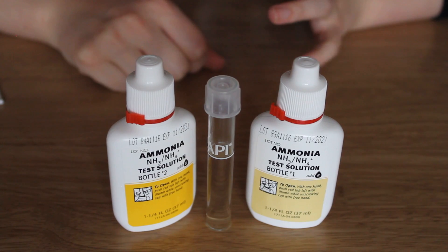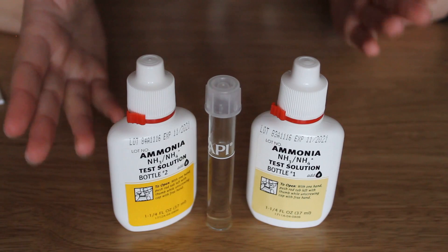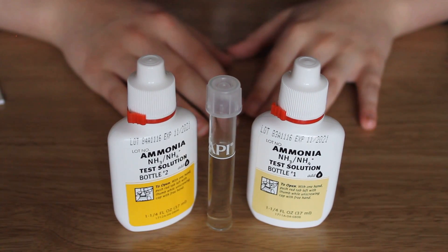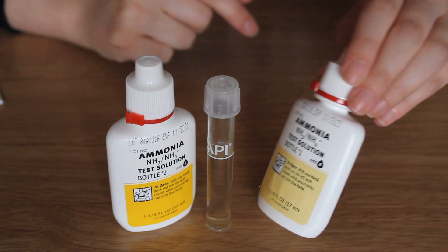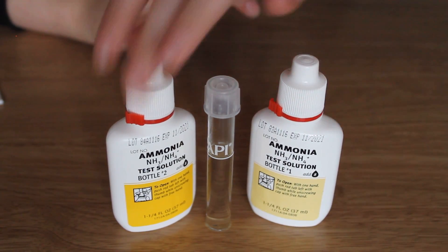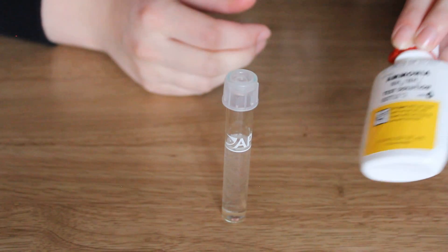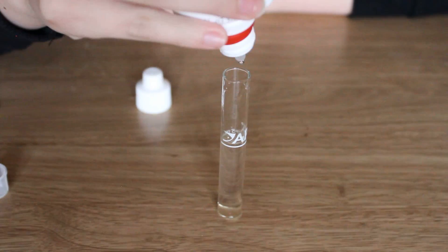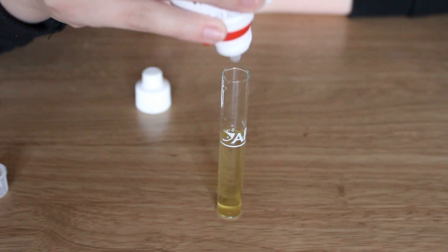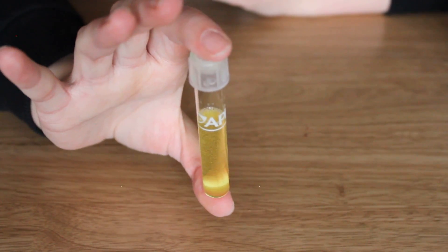Once again aiming for zero but let's face it it's probably not going to be that. We have two bottles and bottle one you need to shake up and then add eight drops. Take bottle two, shake it up and add eight drops of this. Then we're going to leave that to settle for a bit and then we get our result.